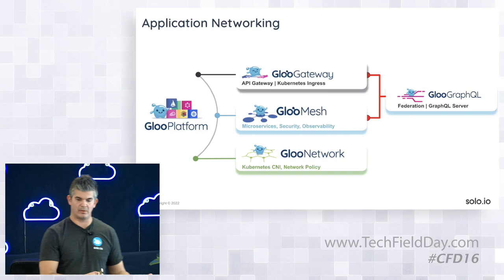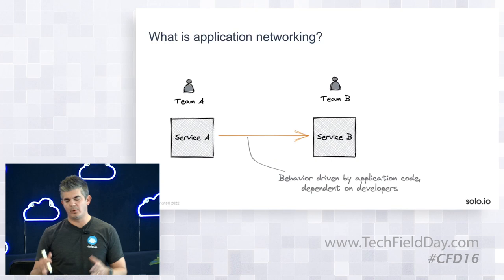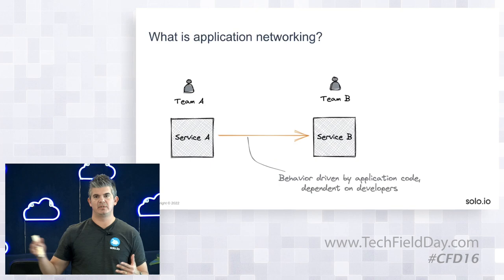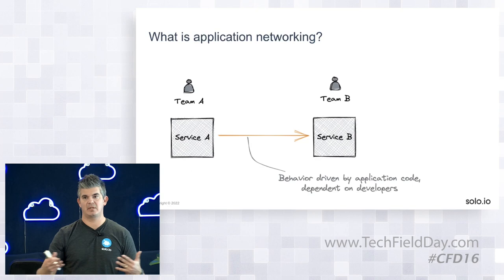We need to start with what we keep referring to as application networking — what does that mean? Trying to boil it down as much as possible: it's when applications are talking with each other. When you deploy to Kubernetes, these applications need to communicate over the network. They might be talking with their peer services, or with databases, message queues, caches, or whatever.